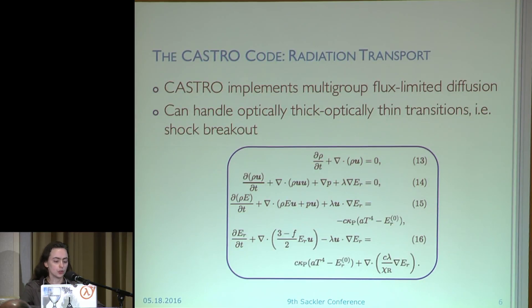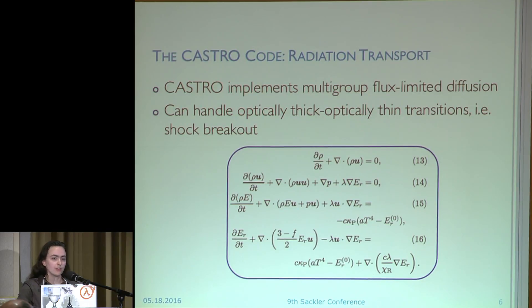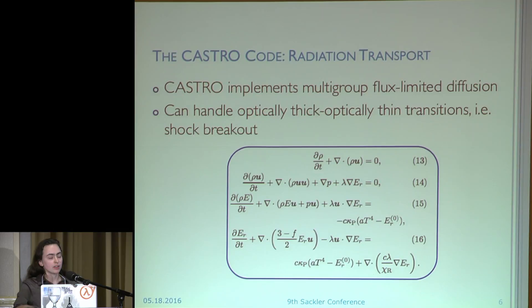An aside on the code used to do this work: this is the Castro Radiation Hydrodynamic Code, developed at Berkeley. It's free and public — you can find it on GitHub under Boxlib. It uses multi-group flux-limited diffusion. This is important to this specific case because in order to simulate a shock breakout, you need a code that can handle the optically thick to optically thin transition region. The shock breakout specifically occurs when radiation that was optically thick and trapped behind the shock is able to free stream ahead of the shock. You can't just use a diffusion transport code — you have to use something that can handle that thick-to-thin transition to do shock breakout correctly.